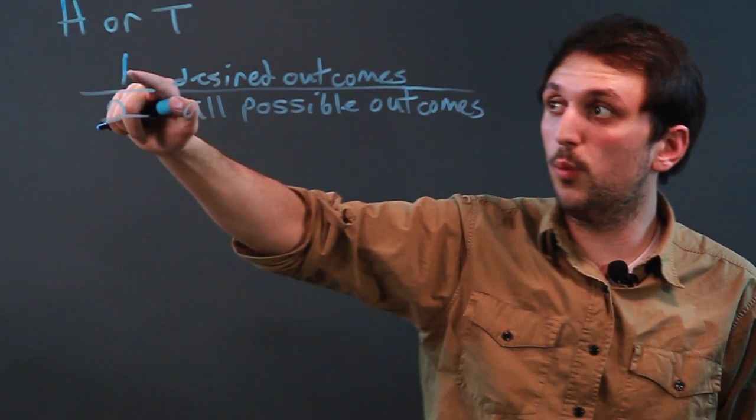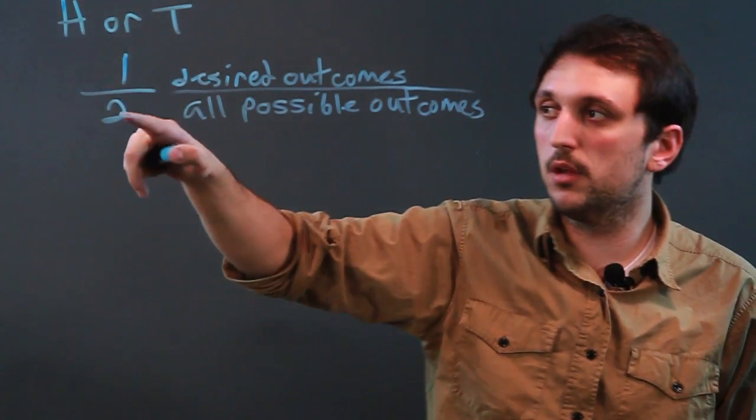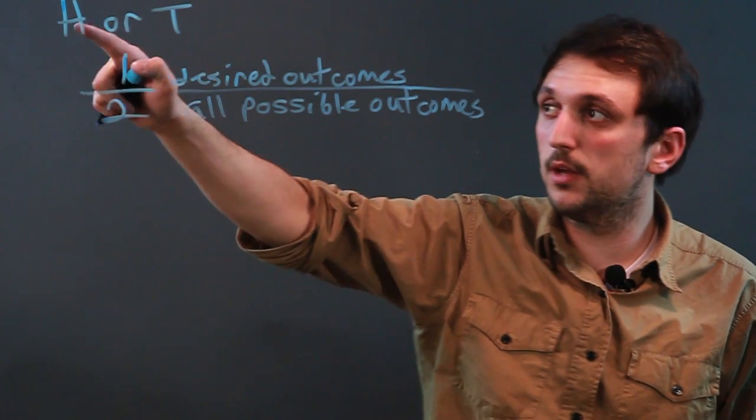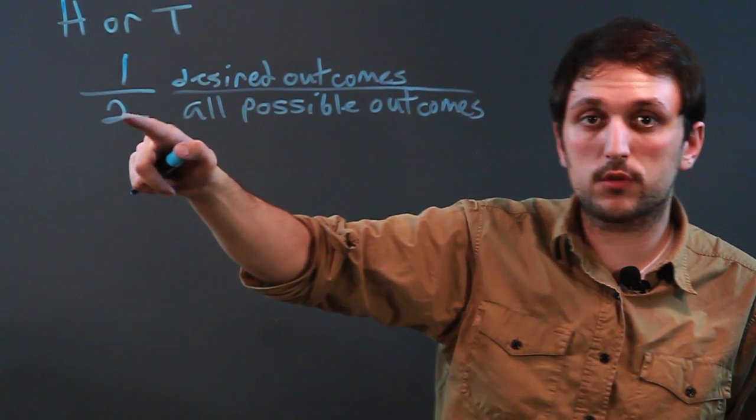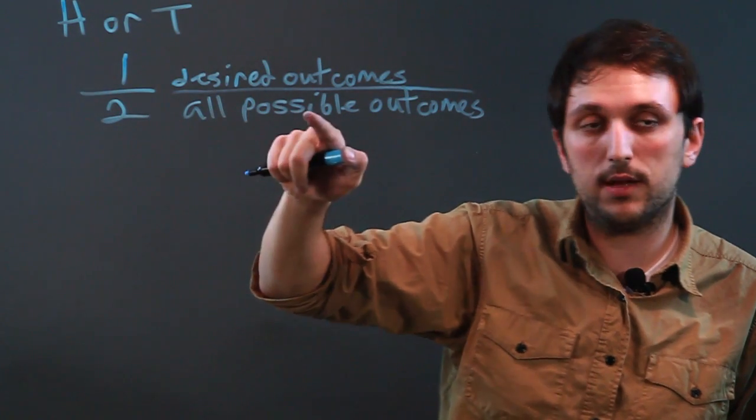So we have one desired outcome, heads, out of two possible outcomes, heads or tails. Now, just because we have heads up here doesn't mean we exclude it from the bottom. This is all possible.